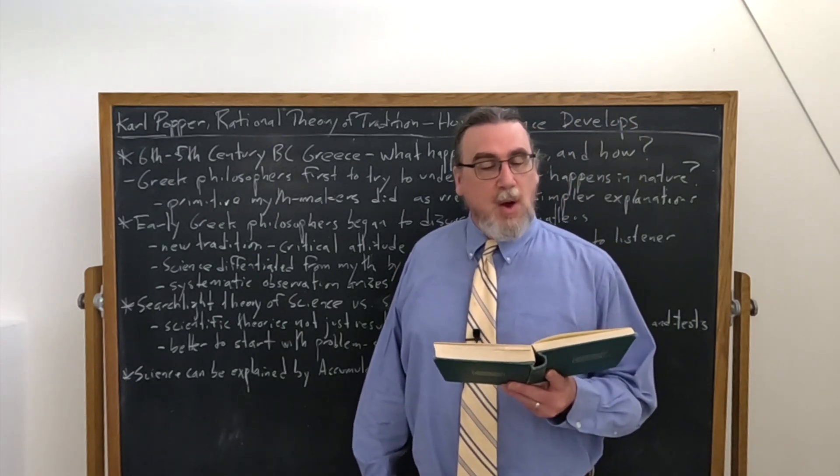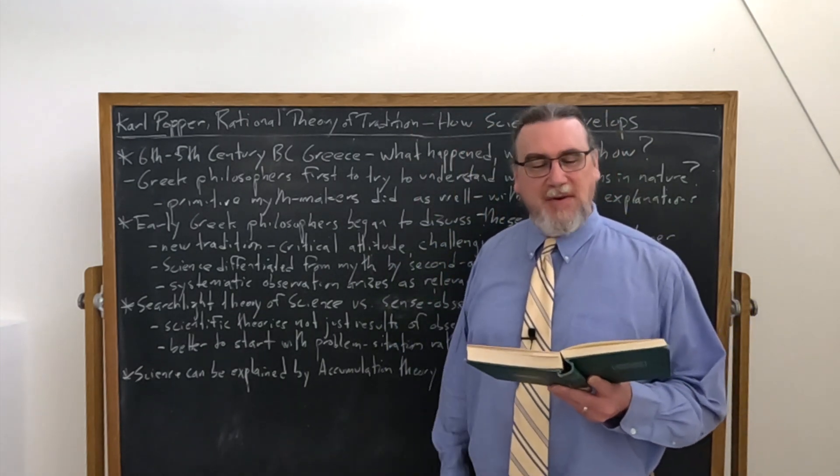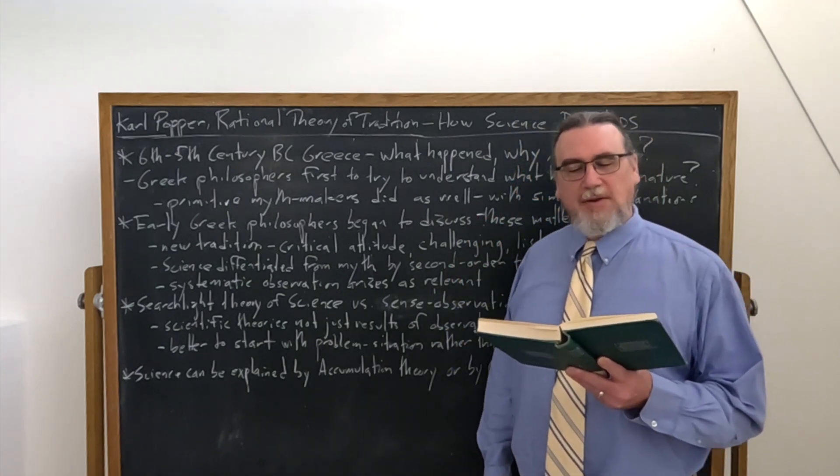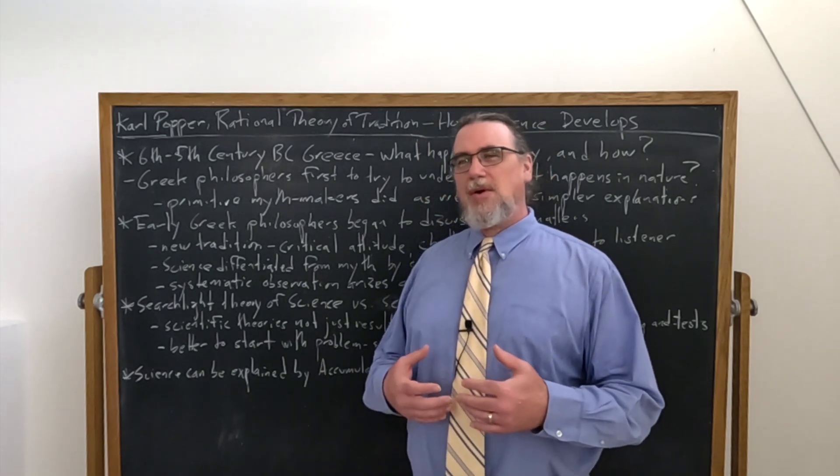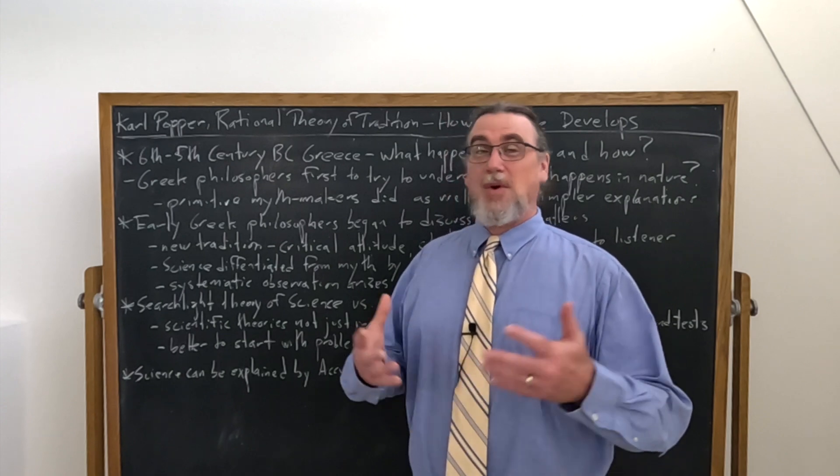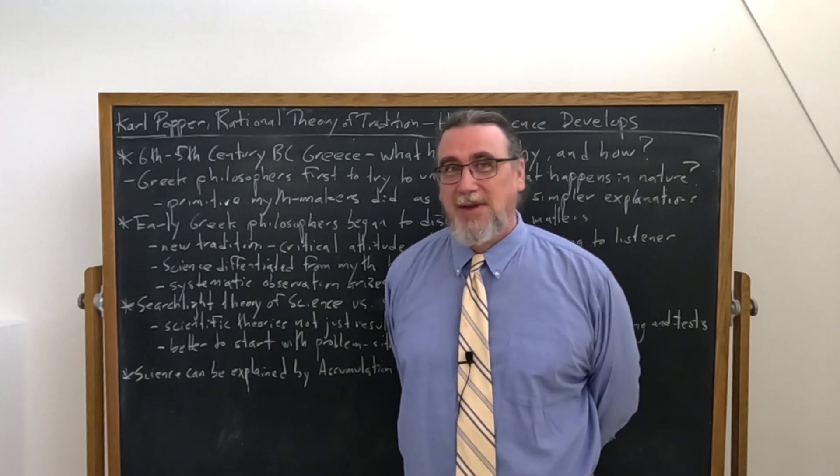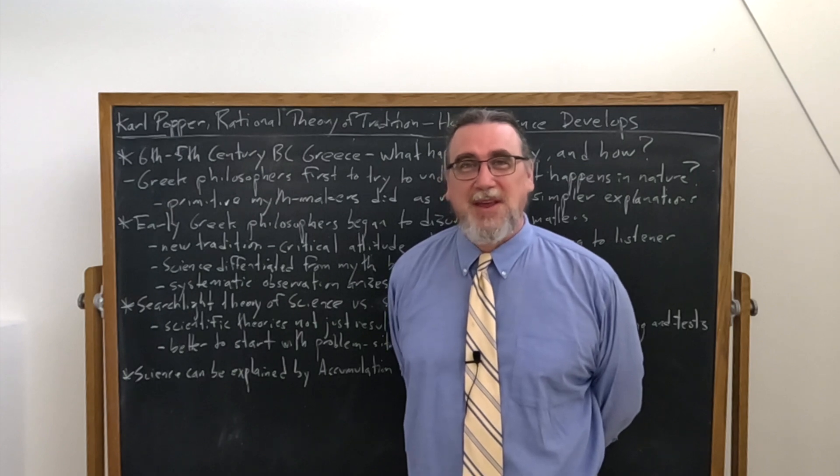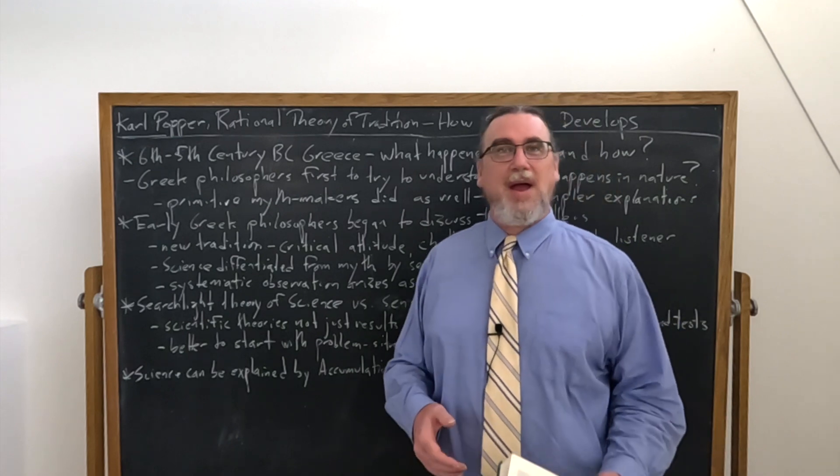And Popper says, well, yes, that is part of what's going on, but that's an unsatisfactory account. Why? The early Greek philosophers did indeed try to understand what happened in nature, but they were Johnny-come-latelys, so to speak. There were other people who were trying to understand what was happening in nature before them. Who were these? The myth makers, the mythologists, the people who had all sorts of accounts for what was going on.